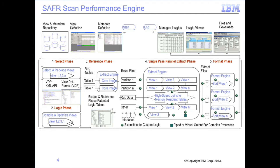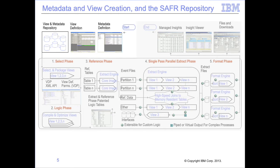Let's briefly review the SAFIR performance engine processes. SAFIR begins by developers creating metadata describing records, files, fields, relationships between files and fields, and user exits which might be called to perform processing in the workbench. They then create views which specify the logic to be applied to the data through the scanned processes.